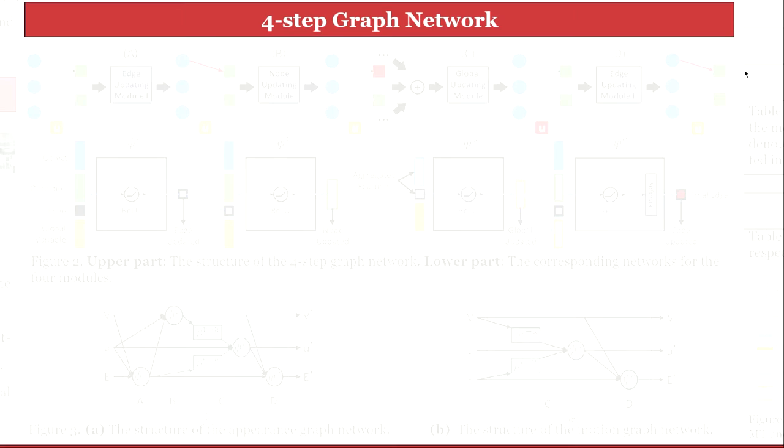Next, we carefully designed our four-step graph network according to the unique characteristic of the multiple object tracking problem. Since there is no ground truth of nodes and the global variable, this network is only supervised by edges. Hence, we update the edge at the end.